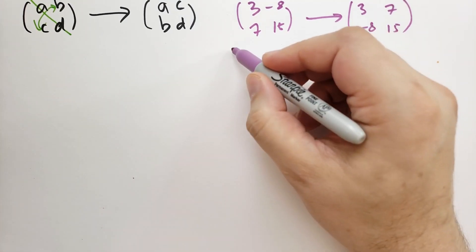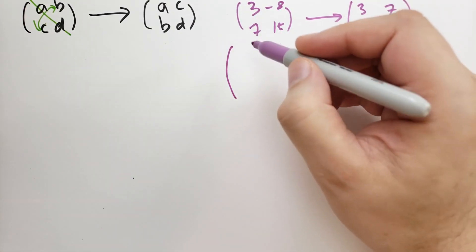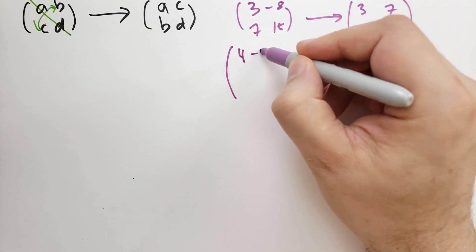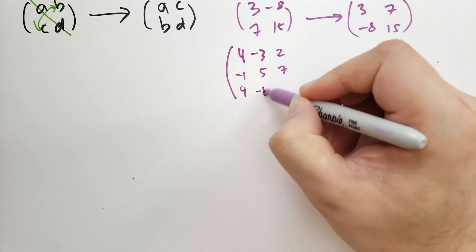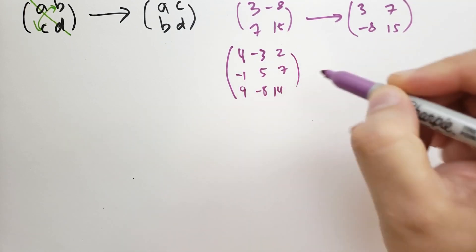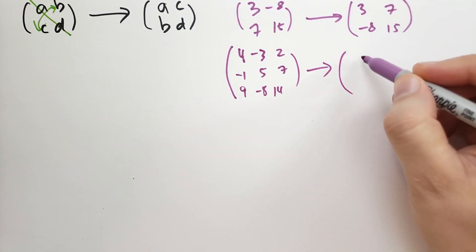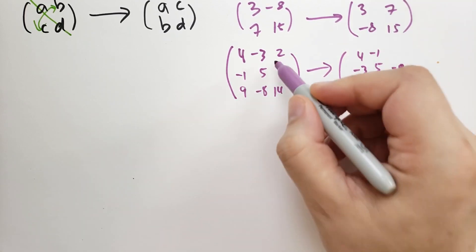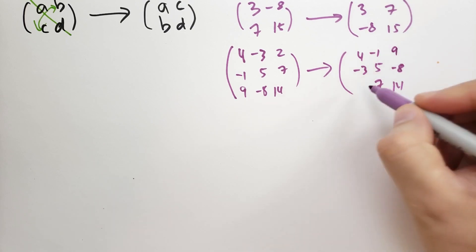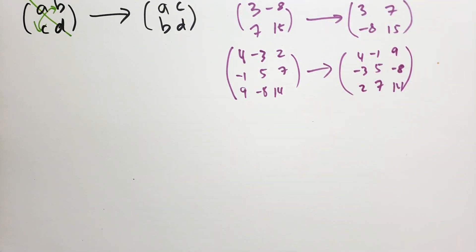If we did a 3x3 matrix, it gets a little more complicated. We have 4, minus 3, 2, minus 1, 5, and 7, and then 9, minus 8, and 14. When we transpose this, the diagonal stays the same: 4, 5, and 14 don't move. Minus 3 and minus 1 are going to flip. These two numbers 7 and minus 8 are going to flip. And finally these two numbers in the corners are going to flip. That's what the transposition looks like.